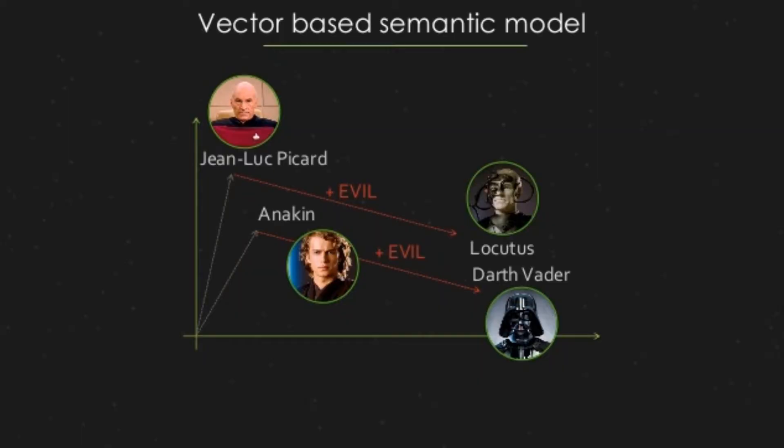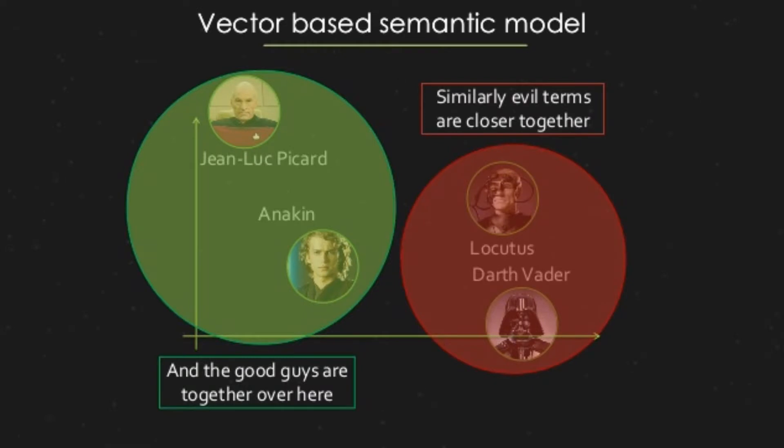Everyone familiar with Star Trek knows — when Jean-Luc Picard was assimilated, he became Locutus. If you look at these concepts, you also find similarities: Locutus and Darth Vader have a short proximity to each other because they're both evil. And Jean-Luc Picard and Anakin are clustered closely to each other because they are both good people. This is the concept of topics and these relationships.